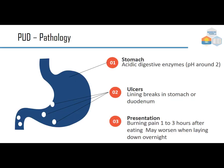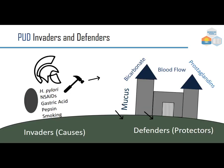The pathology begins with the stomach — the acidic digestive enzymes have a pH around 2, so it's a pretty hostile environment. Ulcerations are lining breaks in the stomach or the duodenum, extending into the small intestine. The presentation usually includes burning pain one to three hours after eating, which may get worse after lying down overnight.